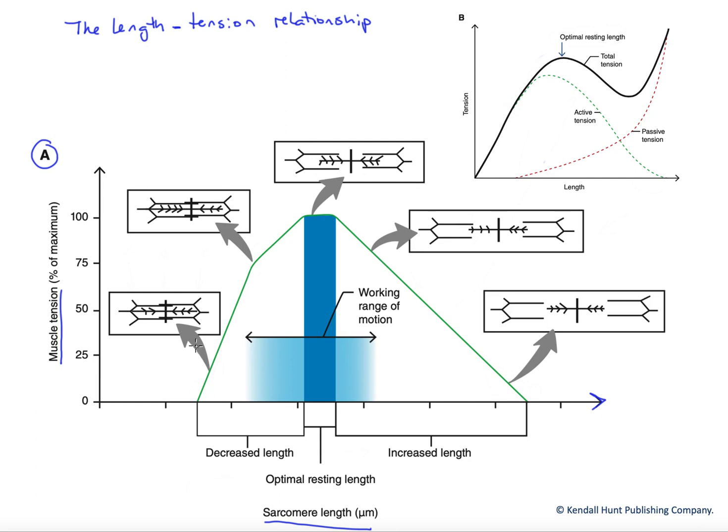And so what we find is that at very short lengths of the sarcomere, and we've got a sarcomere blown up here showing you what's happening, here we've got a Z-disc. Over here we've got a Z-disc, anchoring our thin filaments.